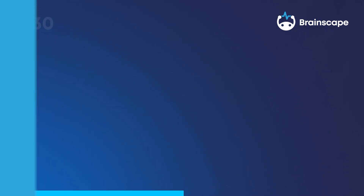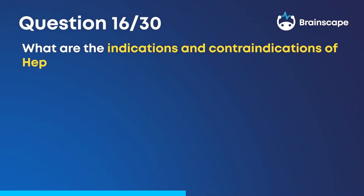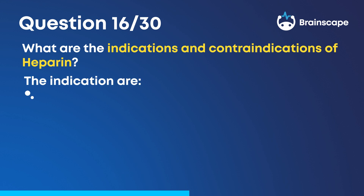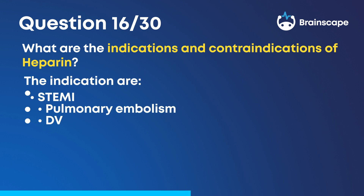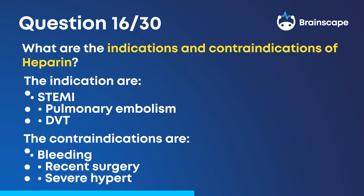Question 16. What are the indications and contraindications of heparin? The indications are STEMI, pulmonary embolism, and DVT. The contraindications are bleeding, recent surgery, and severe hypertension.